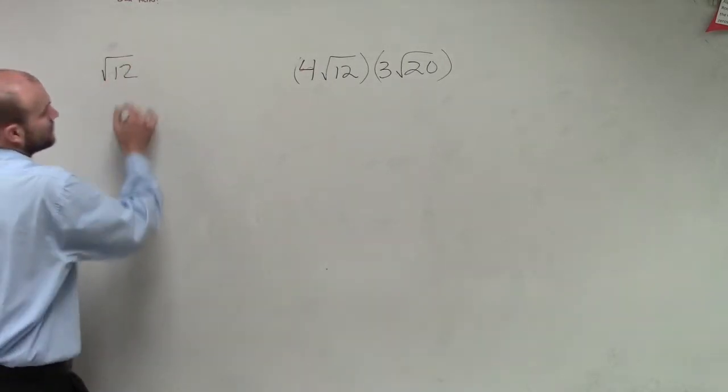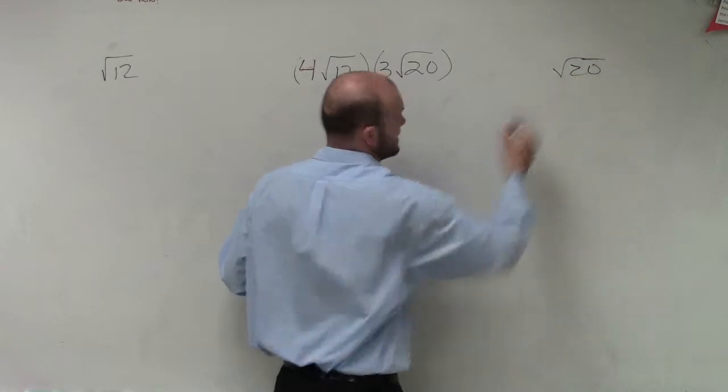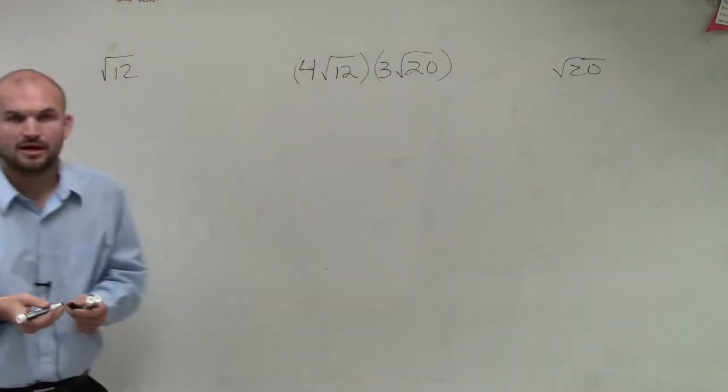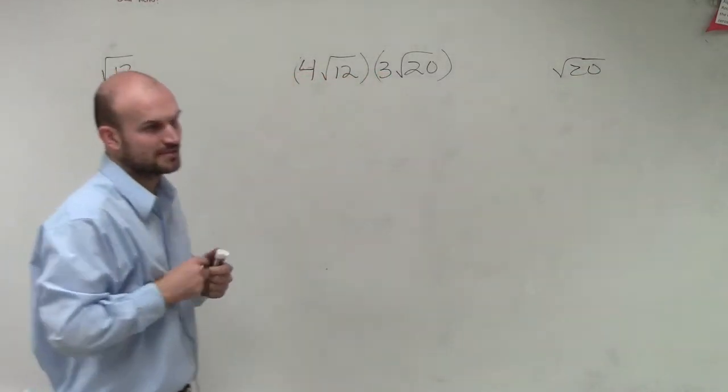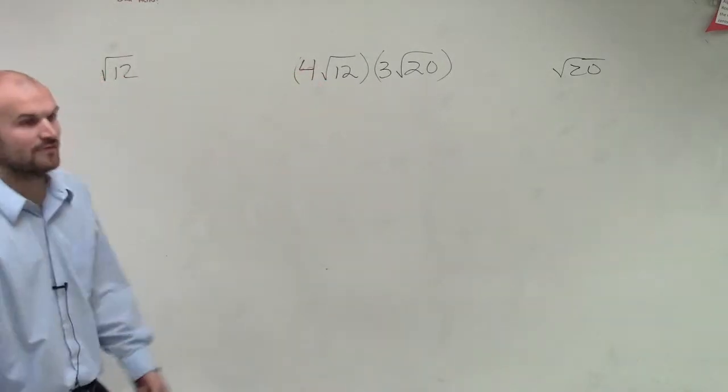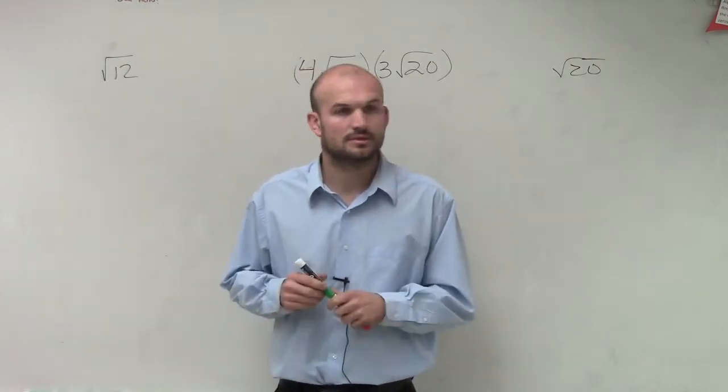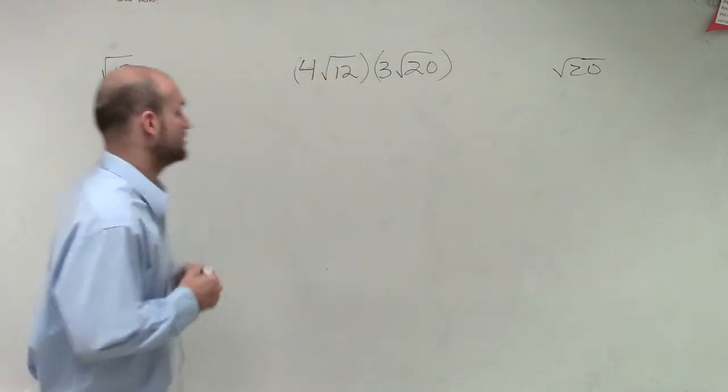So, we have square root of 12, and let's do the square root of 20. Now, last time, remember, I wrote down all the square numbers. So hopefully, you can at least remember the ones up to 25. So, let's see, can I rewrite the square root of 12 as a product of a square number? The square root of 4 times the square root of 3, very good.